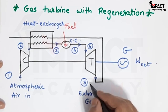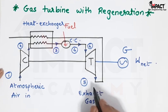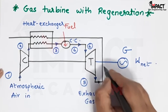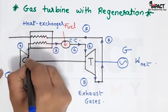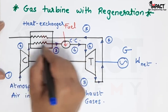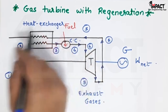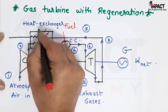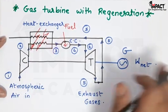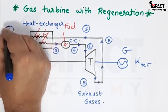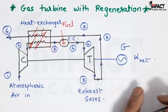Now these exhaust gases, if it were not the regeneration method, would go directly into the atmosphere and we would not be utilizing this energy. So the better way is to bring this exhaust gas back at state 5 and let it pass through the heat exchanger, wherein in one pipeline we have the compressed air going in and from the other pipeline we have the exhaust gases running. What happens is the heat of the exhaust gases goes into the compressed air — the compressed air is heated by the exhaust gases — and at point 6 we are rejecting the exhaust gases back to the atmosphere.